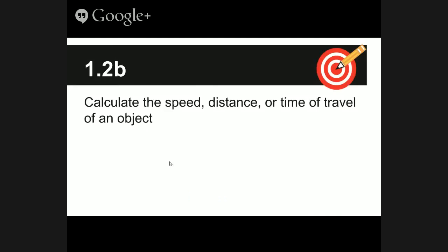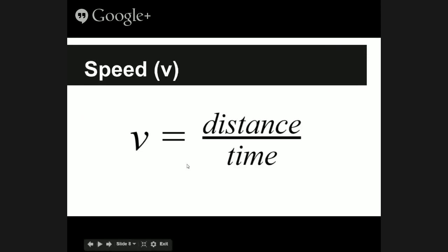Let's take a look at the next learning target: 1.2b. It says to calculate the speed, distance, or time of travel of an object — you should be able to do any of those three things. Remember, speed or velocity V is equal to distance divided by time.